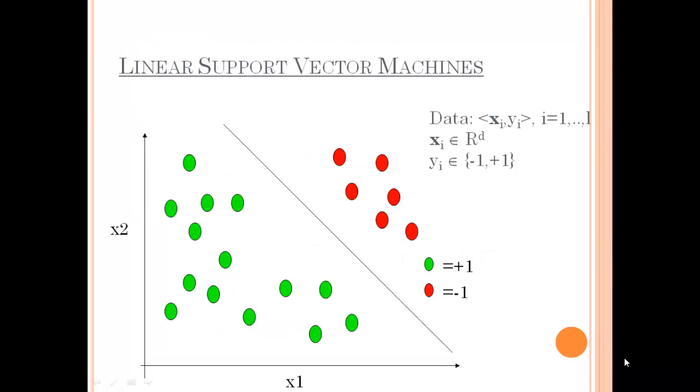This slide shows two planes x1 and x2 with plus 1 and minus 1 separated by colors green and red which are shown by the boundary line.